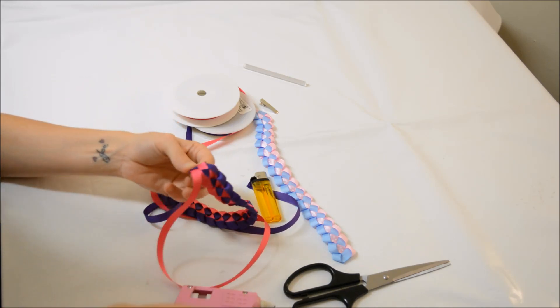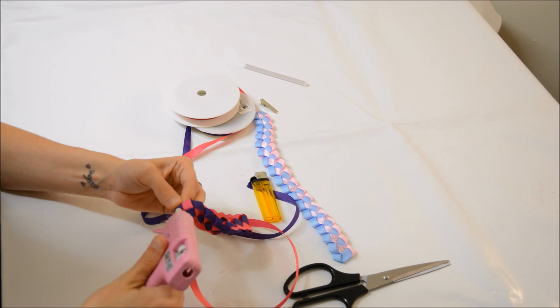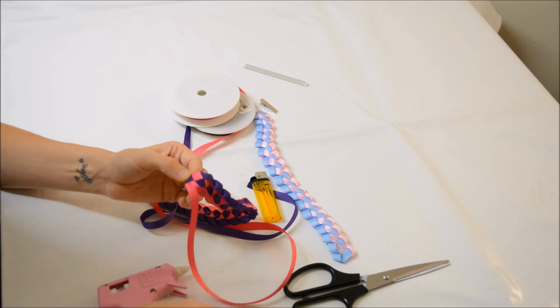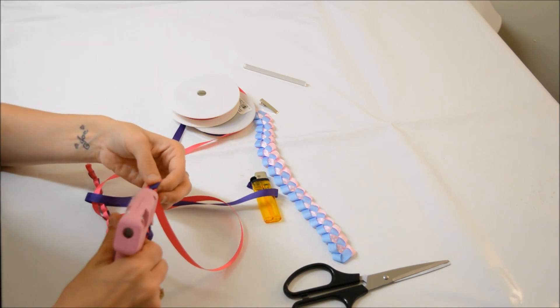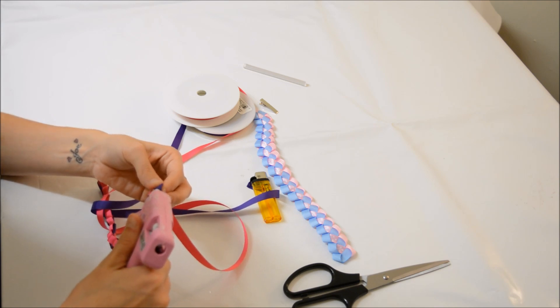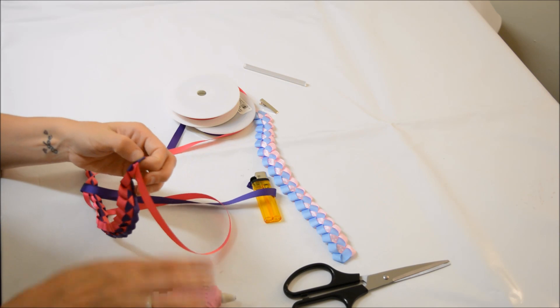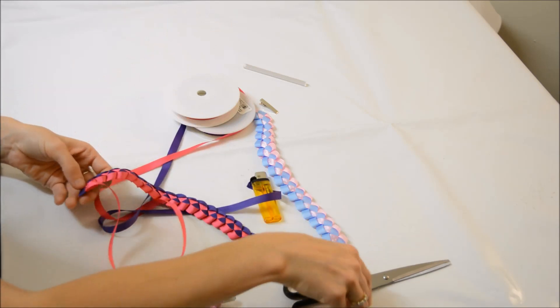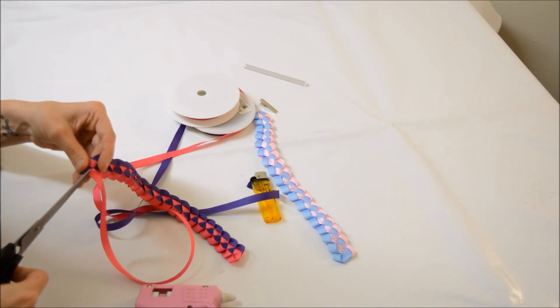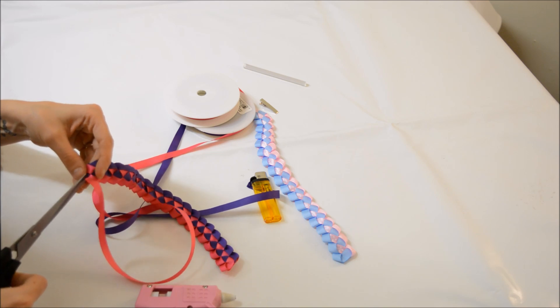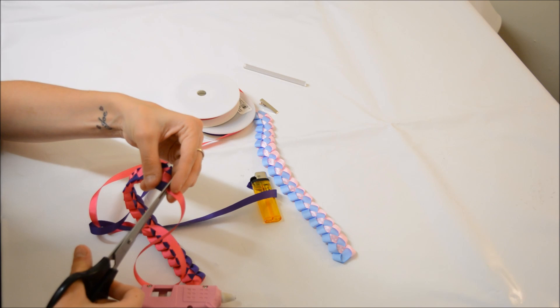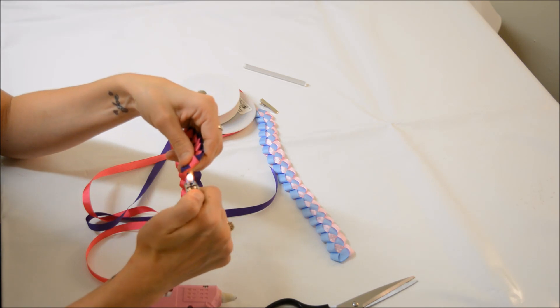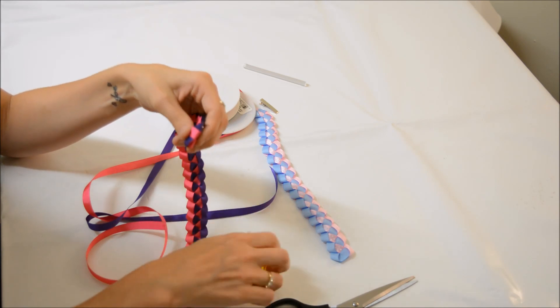Now again, you want to take your glue again, just apply some glue inside, push it down, and again to the back. Now you want to take your scissors, carefully snip off the excess, and again heat seal that to prevent any fraying.